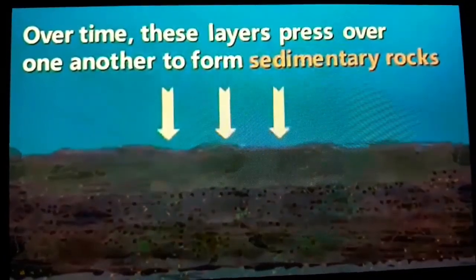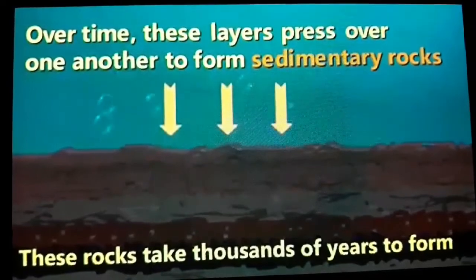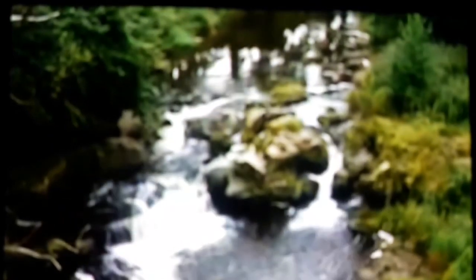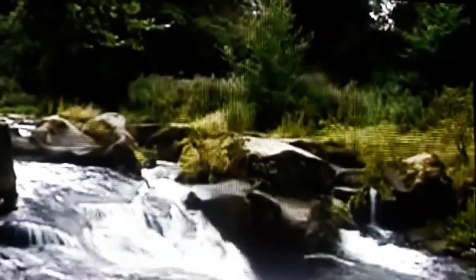They are called sediments. As these small layers of tiny rocks, dust, soil, leaves, and many things build up gradually, they become so heavy, forming layer after layer one after another. After so many years, these get heavy and become crushed and pressed over one another. After so many years, when they get pressed and crushed, these small sediments become a heavy rock, and this rock is known as sedimentary rock.